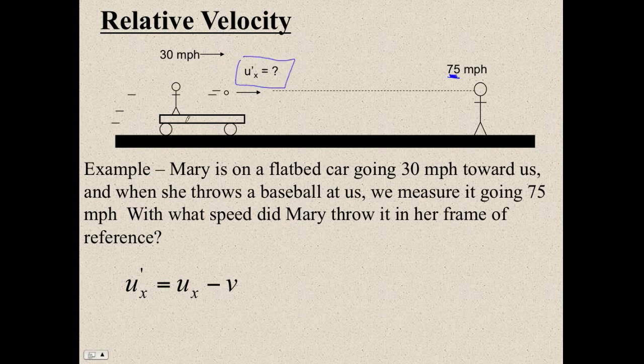But now the question is, what speed did she throw it with respect to her car? Well, we know that 30 plus that equals 75, so it must be 75 minus 30. To figure out what that speed is that she threw it with respect to the car, it's 75 minus 30. And that's going to be 45 miles per hour. That's the speed that she pitched the ball relative to her car.